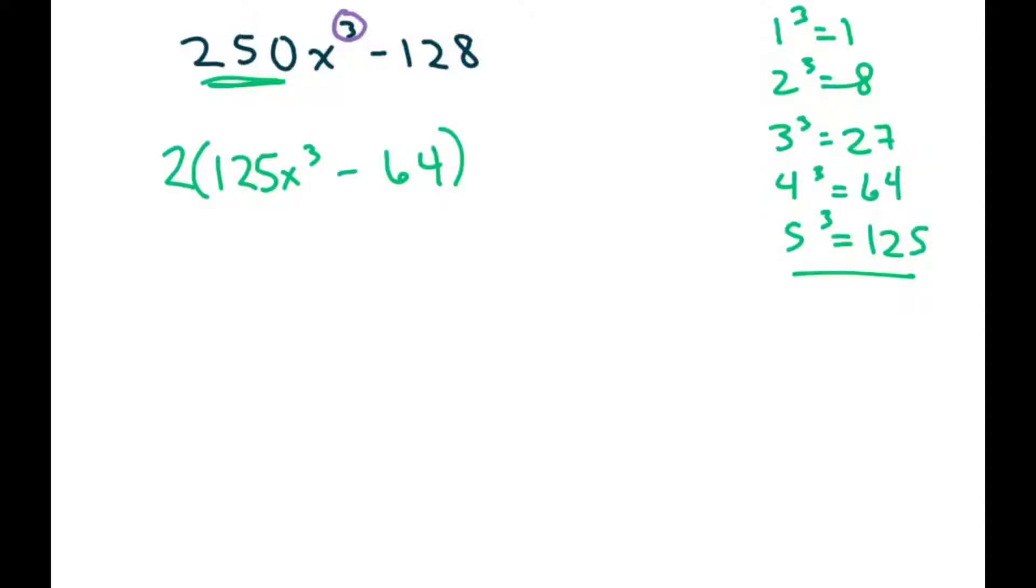Now I do have two of my cubes in here. So I can use the formula, a cubed minus b cubed equals a minus b times a squared plus ab plus b squared.